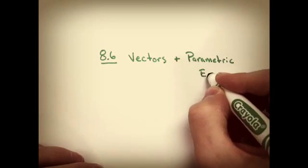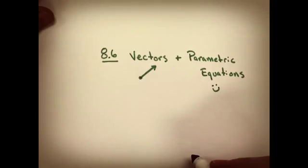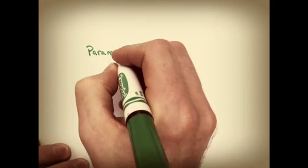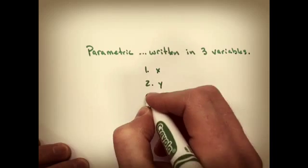We're going to do section 8.6. It's called parametric equations. Parametric equations are ways to express a line, x and y, in terms of a third variable. Usually that third variable is t.